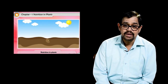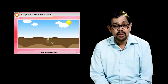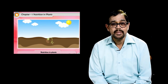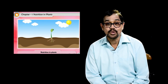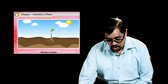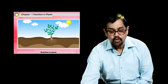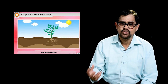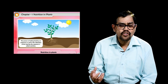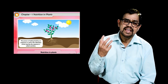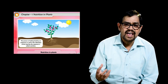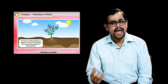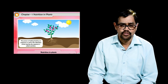These are some definitions that do come in the examination, so you need to memorize them. In autotrophic mode of nutrition, 'auto' means self, so autotrophic plants can synthesize their own food. Green plants are autotrophic.